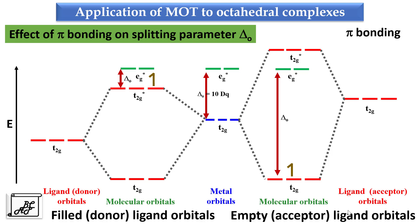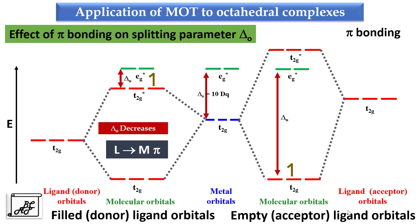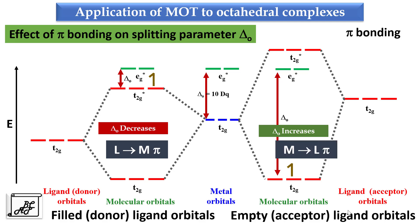In the case of filled or donor ligand orbitals, delta O decreases, and this type of interaction is called ligand-to-metal pi interaction — the ligand orbitals donate electrons to the central metal atom. In the case of empty or acceptor ligand orbitals, delta O increases, and this interaction is called metal-to-ligand pi interaction — the metal orbitals donate electrons to the empty acceptor ligand orbitals.